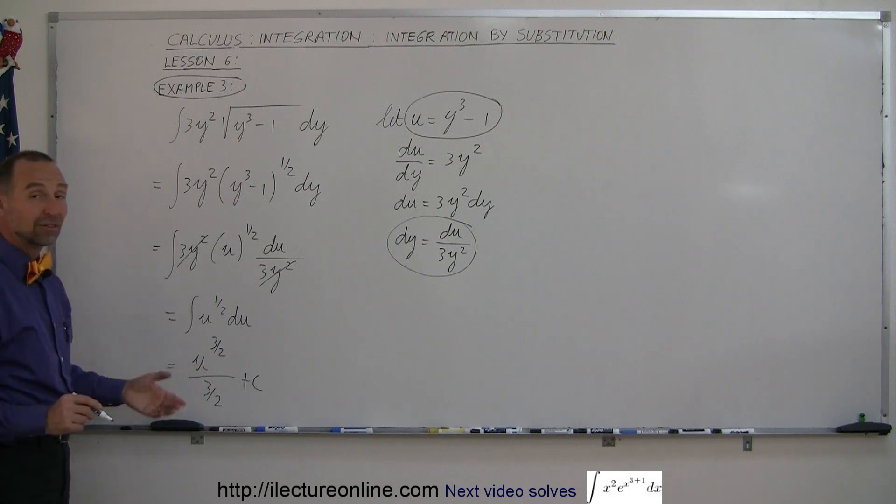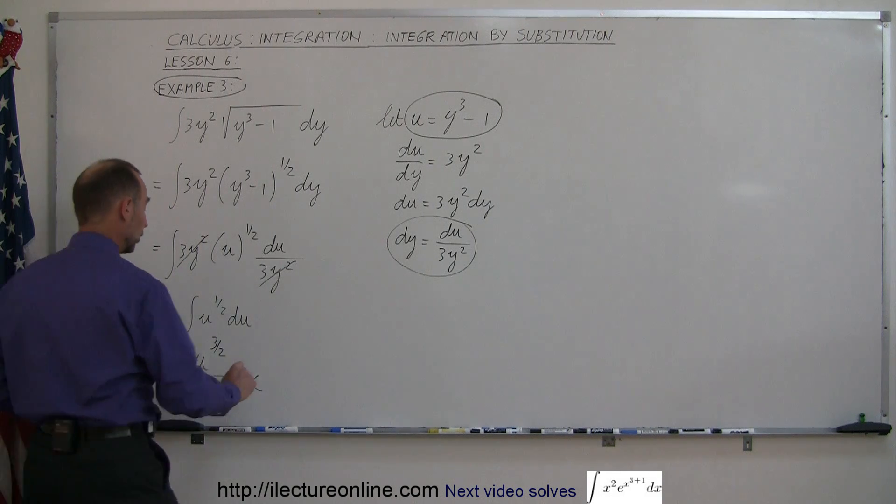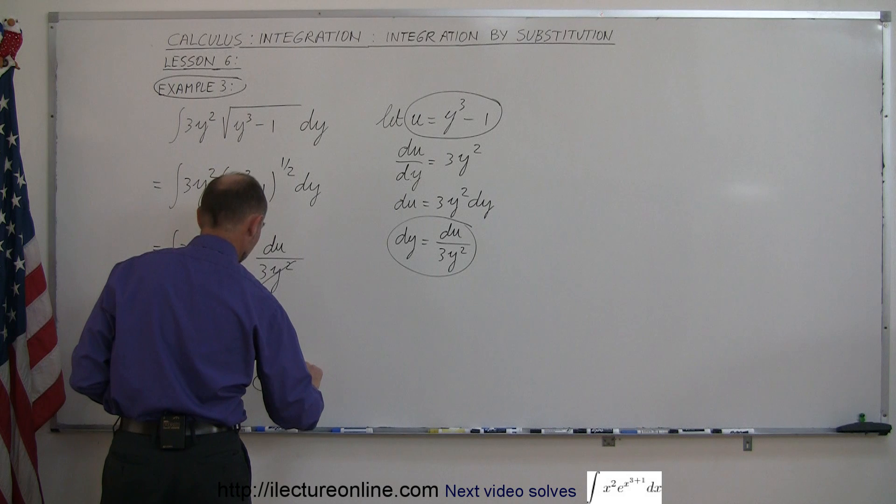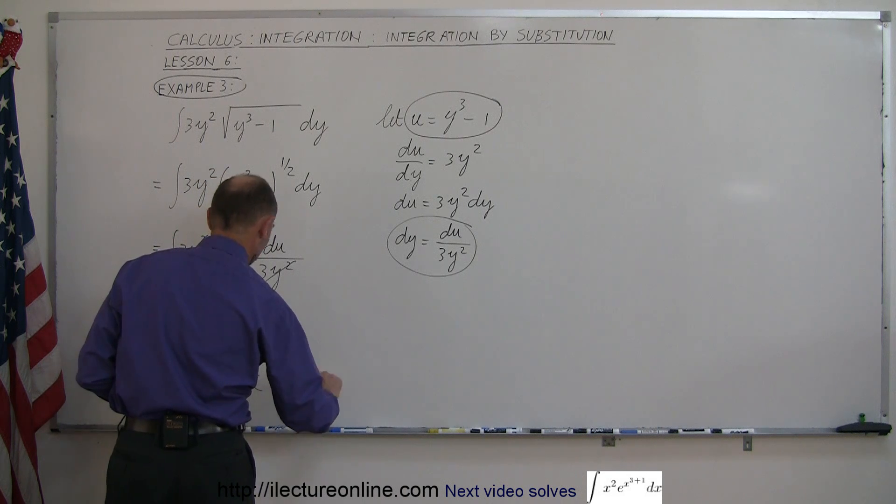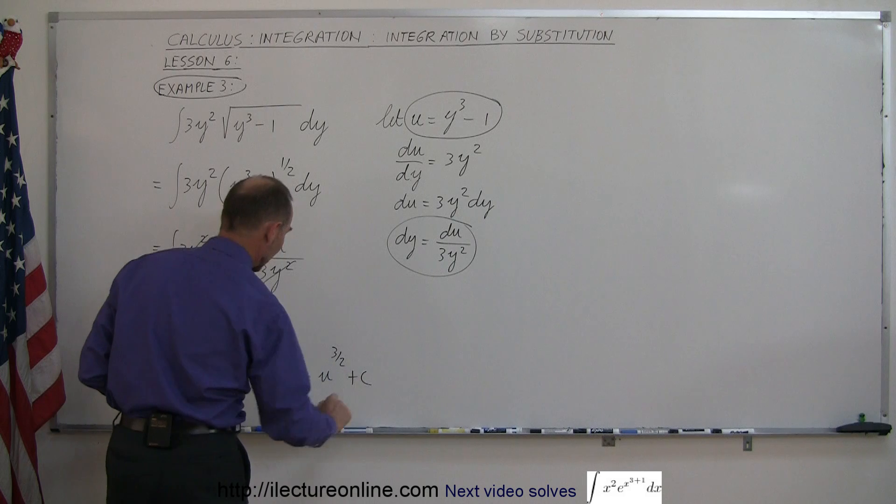Of course, divided by 3 halves is the same as multiplying times 2 thirds. So this is equal to 2 thirds times u to the 3 halves plus a constant of integration.